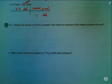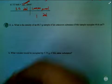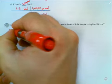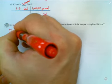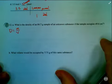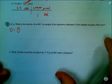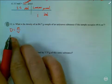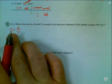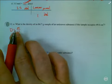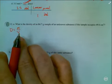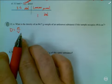Number 12a and b, we're going to be doing some calculations using density, so we will be using the equation density equals mass divided by volume. Keep that in mind. Here we go. What is the density of an 84.7 gram sample of an unknown substance if the sample occupies 49.6 cubic centimeters?